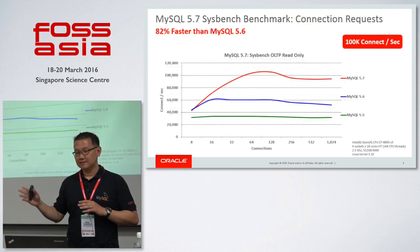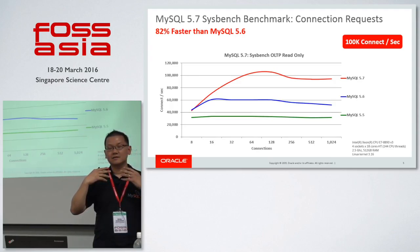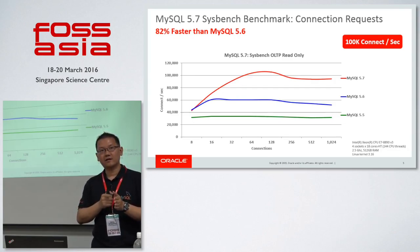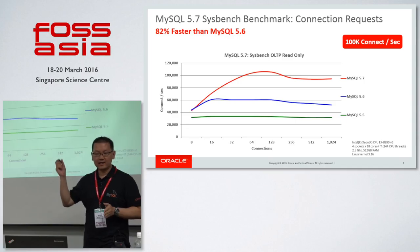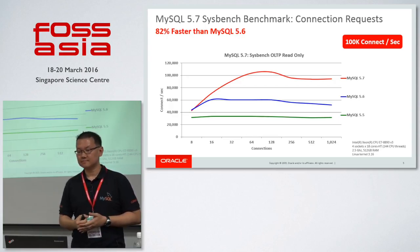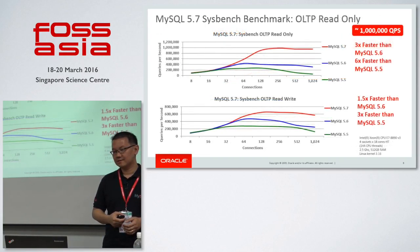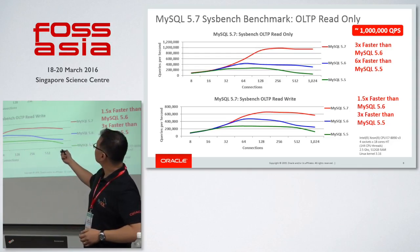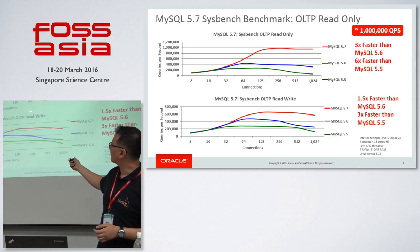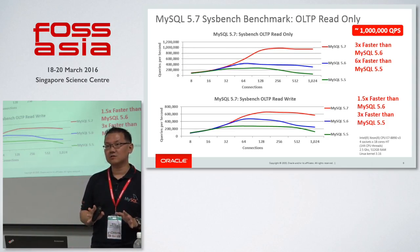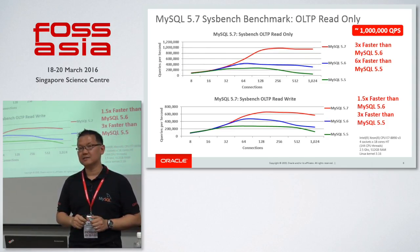The connection request benchmark measures how fast connections are made within MySQL — connect, reconnect, disconnect. In 5.7, we did a lot of improvements. In SysBench, we actually reached 100,000 connects per second. And in the SysBench OLTP benchmark, we have significant improvements in both read-only and read-write performance against our predecessor.